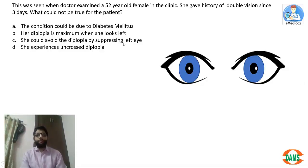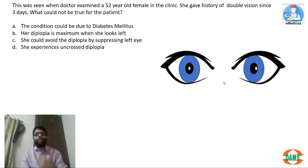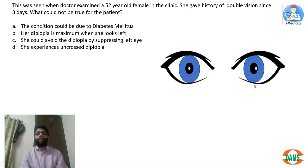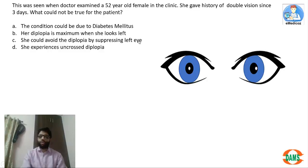Suppression capability is present only in children under eight years old, so this 52-year-old female cannot suppress the image. She can avoid diplopia either by occlusion of either eye, since it is binocular diplopia, or by adopting a compensatory face turn towards the left. Therefore, option C — suppression — is incorrect.